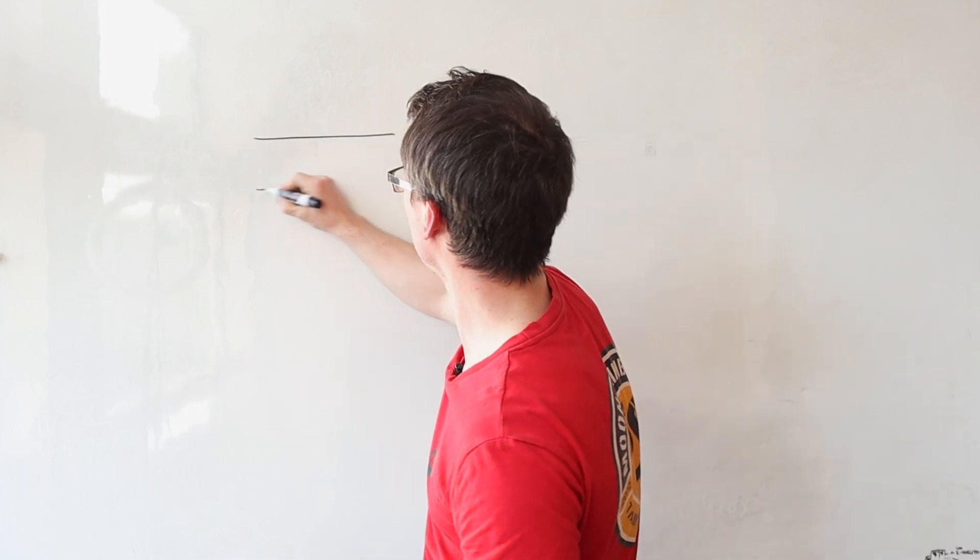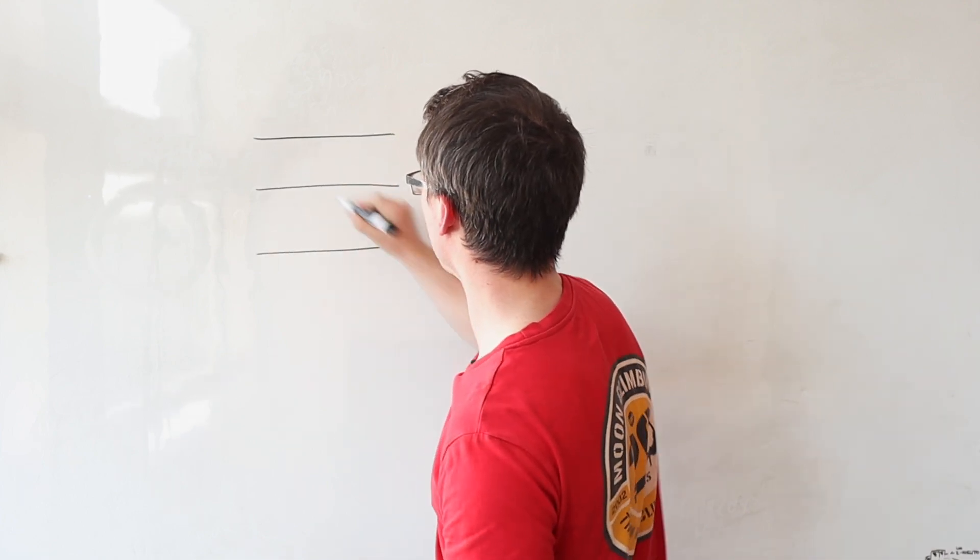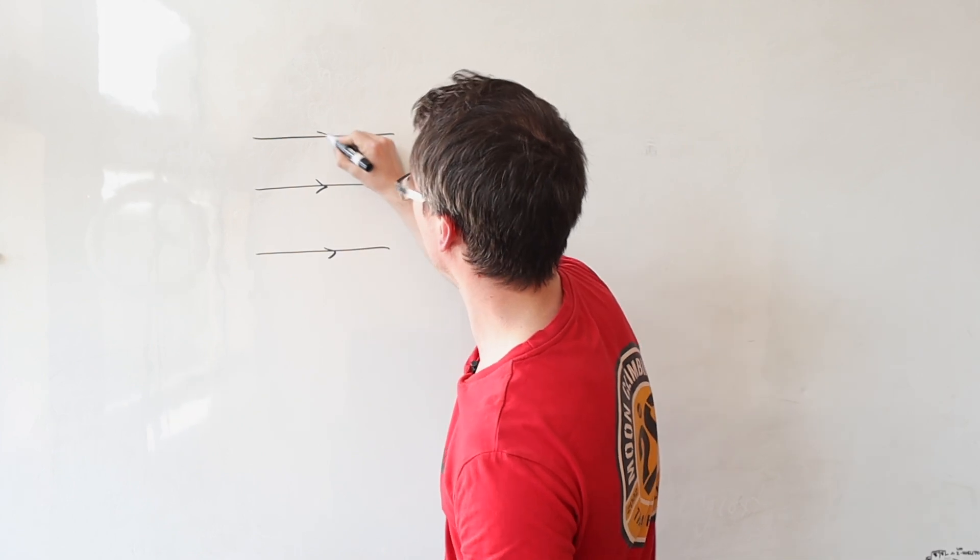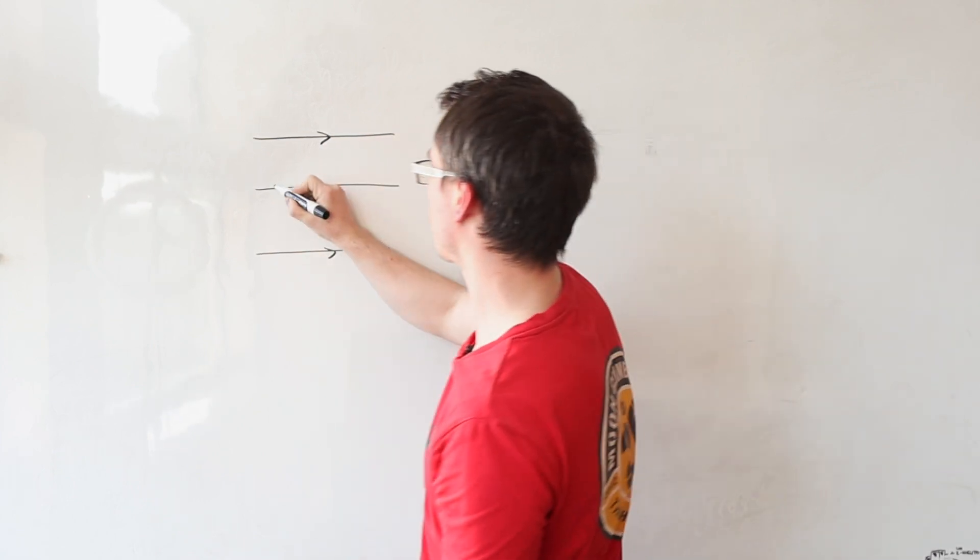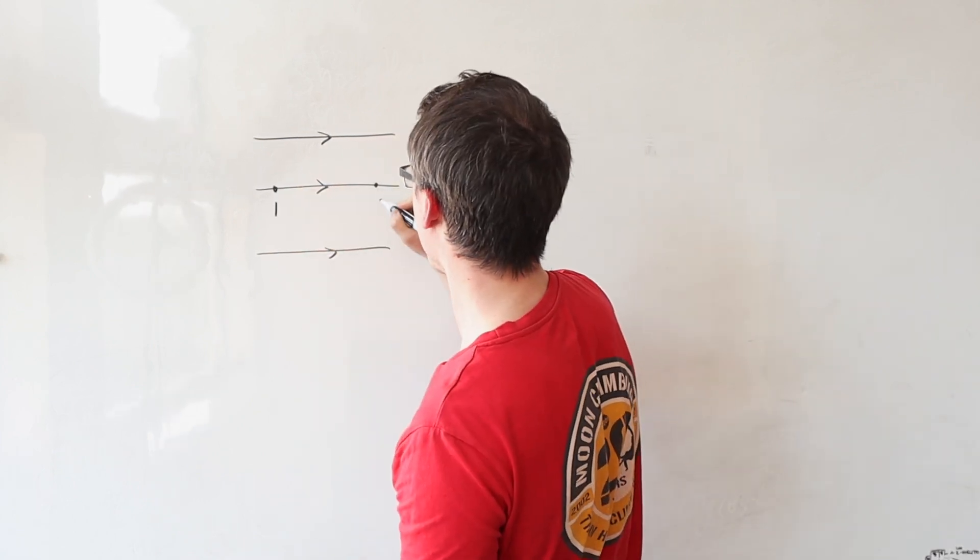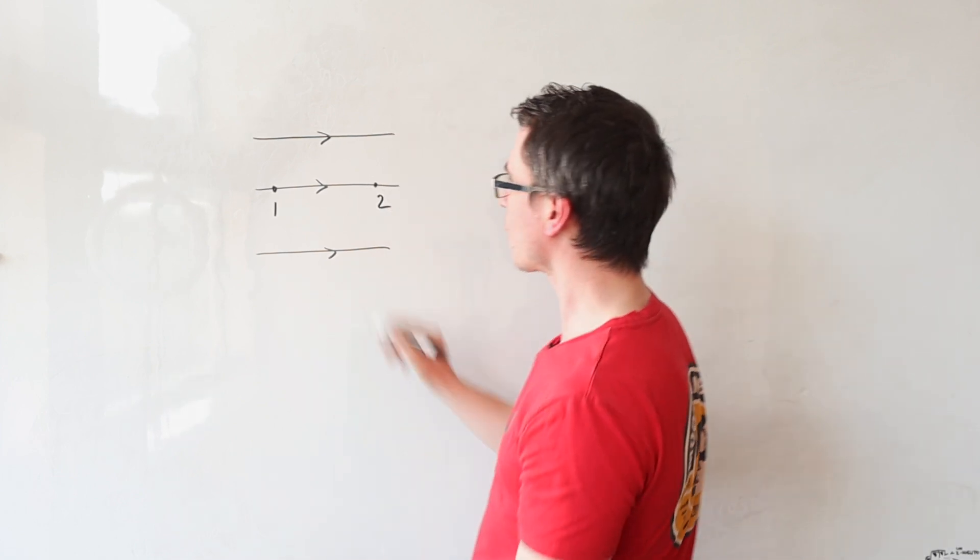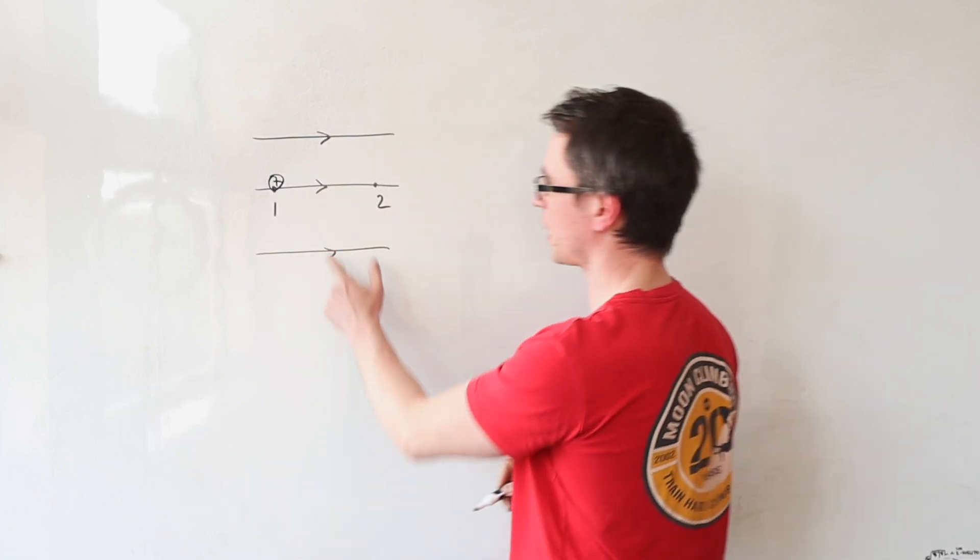Here is an electric field which is going in this direction. I'm going to give you two points, let's say one and two. Let's have a positive test charge across here.